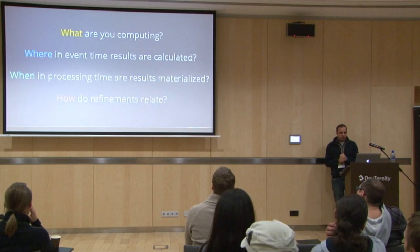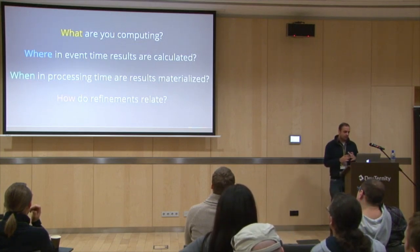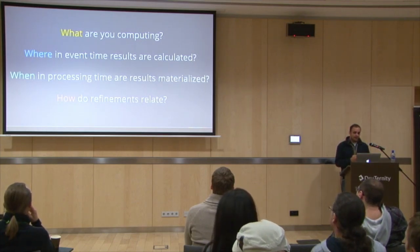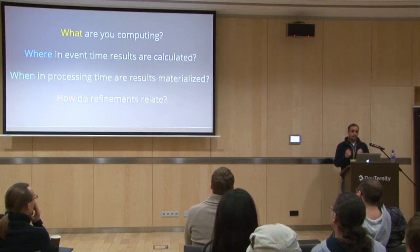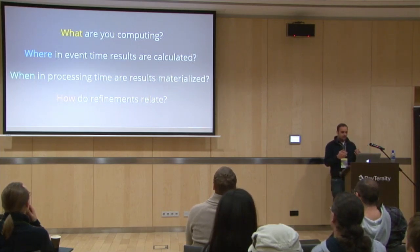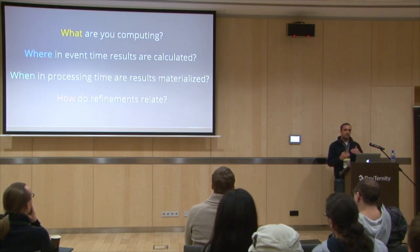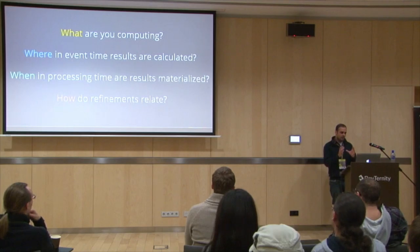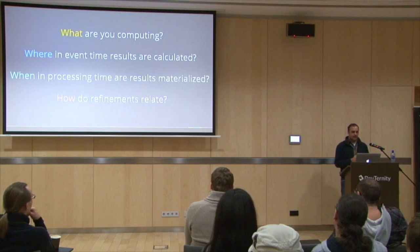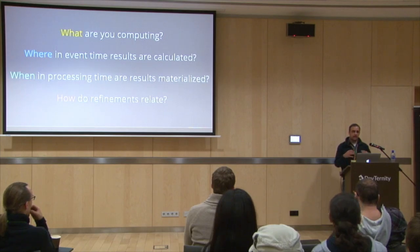In Dataflow, there are four fundamental questions we are trying to answer. First: what are you computing? Second: where in event time are results calculated — how does event time affect the results? Third: when in processing time are results materialized — when do you want to emit results? And the last one: how do refinements relate? If you have some data coming in late, what do you do — do you drop that data, add to the results, or what?